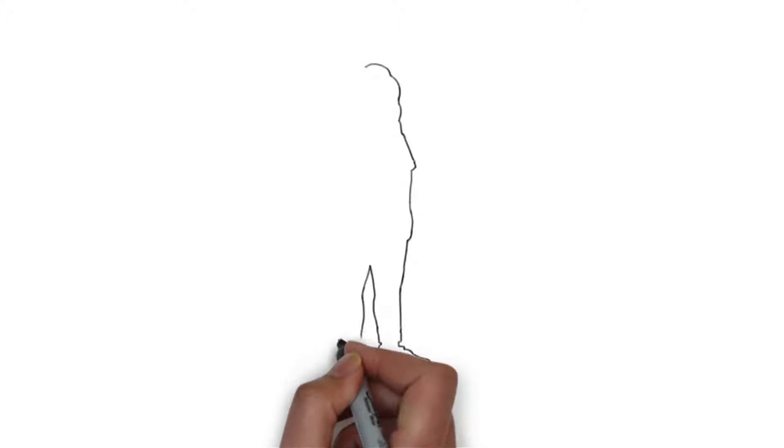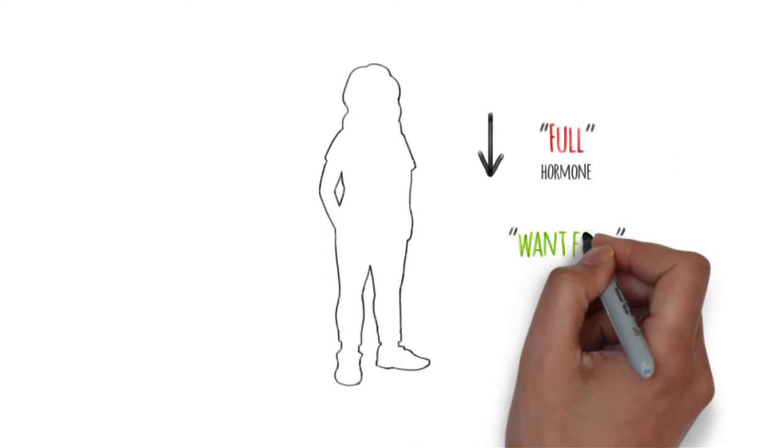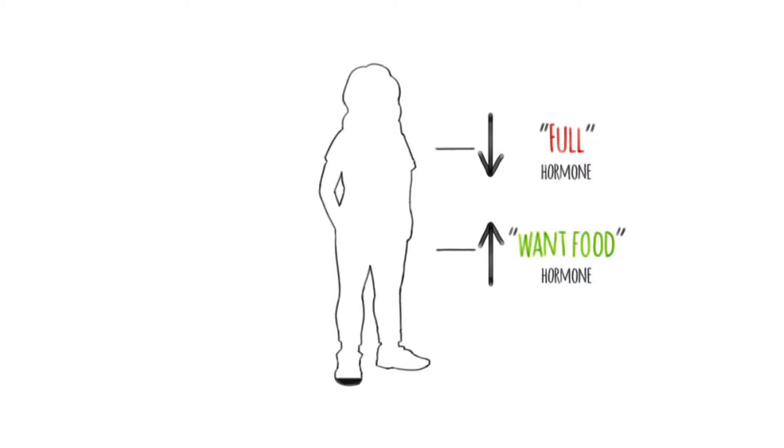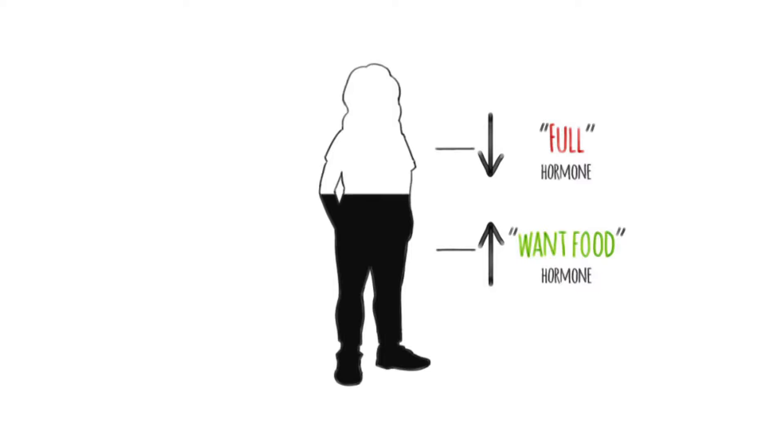This shows us that when you gain weight back after losing it, it's not that you lost motivation or haven't tried hard enough. The truth is changes in your appetite hormones work to defend your former weight. When our ancestors lost weight, it was because their food supply was interrupted. So even though this system which constantly increases our appetite in response to weight loss may have helped us back then, now it works against our ability to lose weight and keep it off.